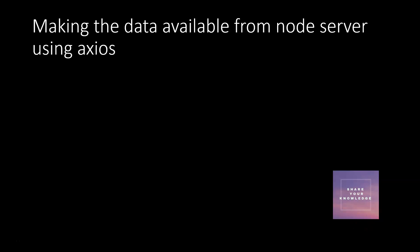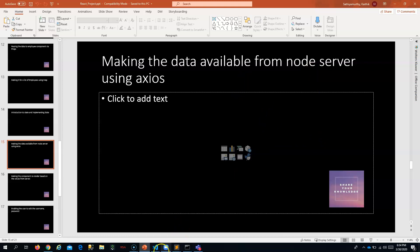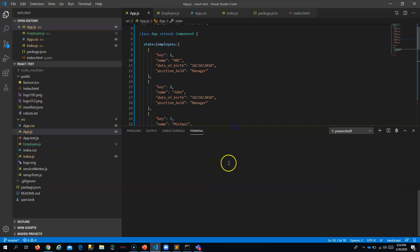We are moving to the next step: making the data available. Till now we have the employee list hard-coded in our component. Now let's take the data from the node server using axios. React is just a library — unlike Angular it is not a framework, so it does not have its own HTTP service. To get data from external servers we have to rely on third-party libraries, and right now we will proceed with axios.